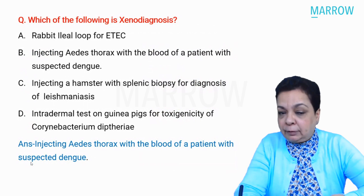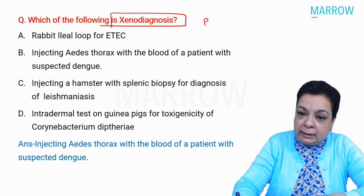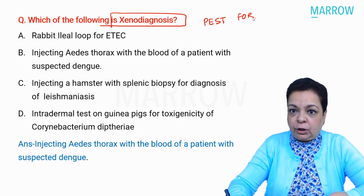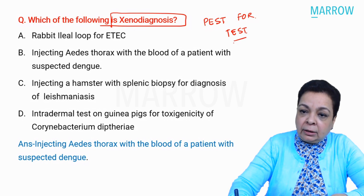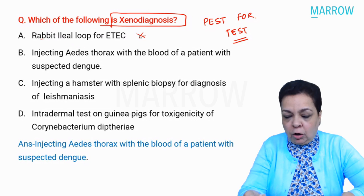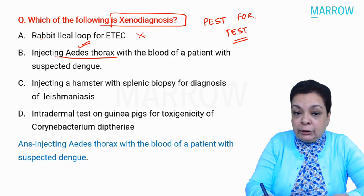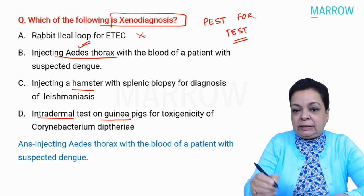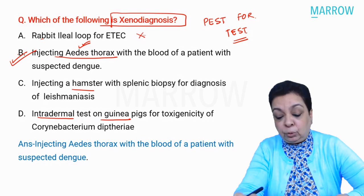Next question was a repeat: which of the following is a xenodiagnosis method? Xenodiagnosis means using a vector — a pest as a test — an arthropod, not a laboratory mammal. The answer is injecting Aedes thorax with the blood of a patient. Rabbit ileal loop, hamster injection, and intradermal test on guinea pigs all use mammals, not arthropods.